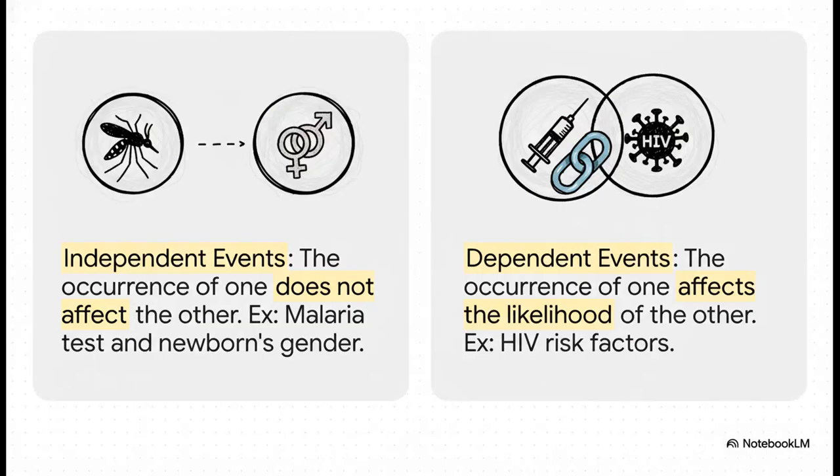Now, this here is a really crucial distinction. On one side, you've got independent events. This is when one outcome has absolutely zero effect on another. For example, a mother having malaria doesn't change the odds of her newborn being a boy or a girl. They are completely unrelated.